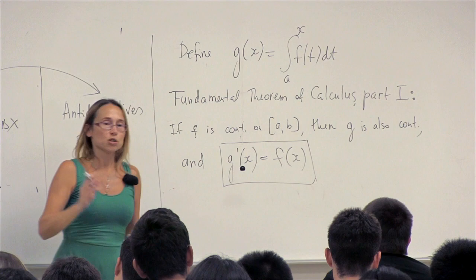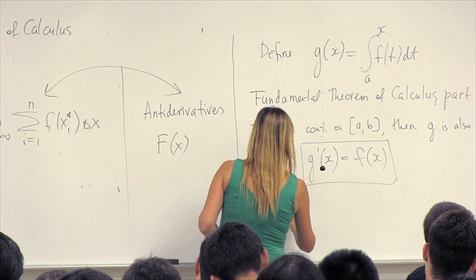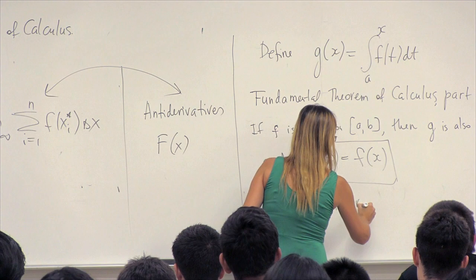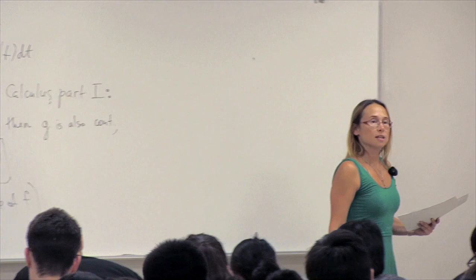We can say that g is an antiderivative of f. This statement can be proven rigorously. Instead of proving it, I'm going to give you a motivation — a picture example of how you can think about this theorem.